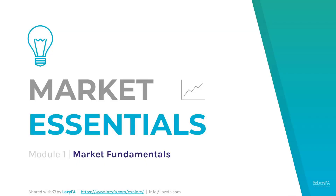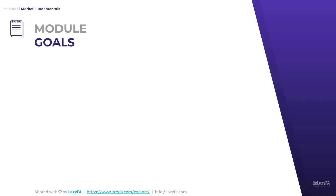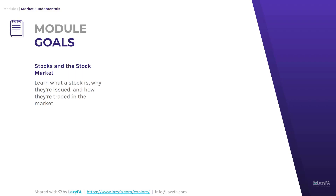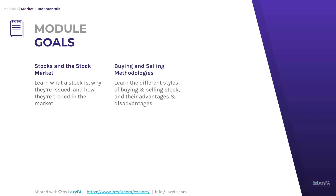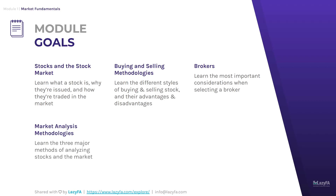We're going to begin tonight by talking about market fundamentals. In this module we're going to achieve six specific goals. First, we'll define what a stock is, why companies issue stock, and how stocks are traded. We'll also look at the different buying and selling methodologies that traders and investors use, along with their advantages and disadvantages. We'll talk about the most important considerations when selecting a broker and cover the three major methods of analyzing stocks: technical analysis, fundamental analysis, and hybrid analysis.